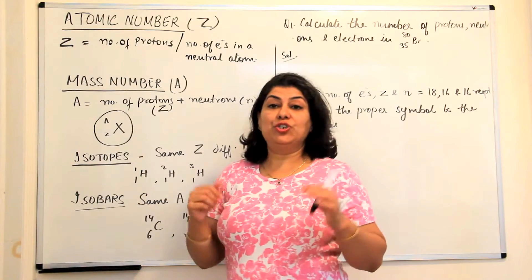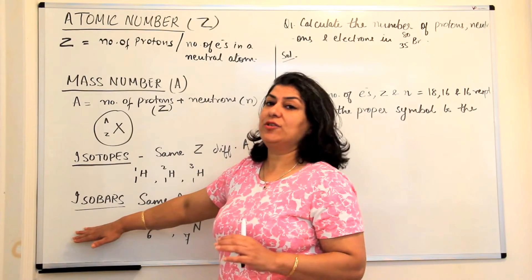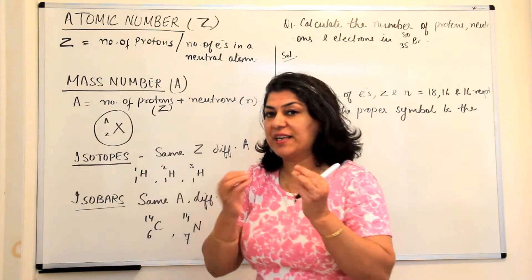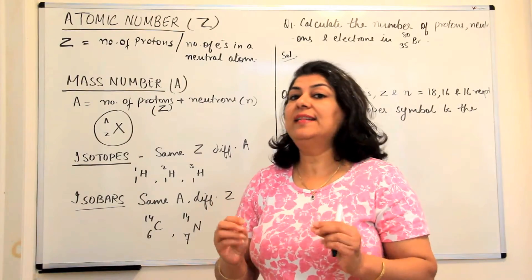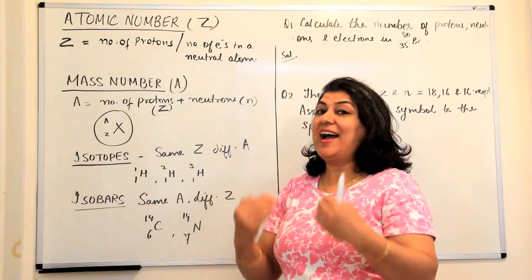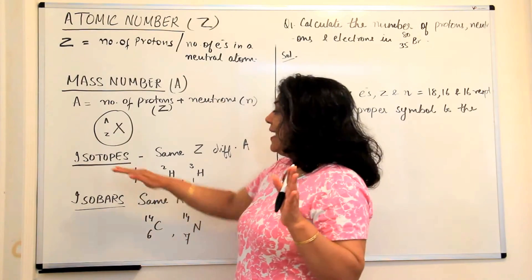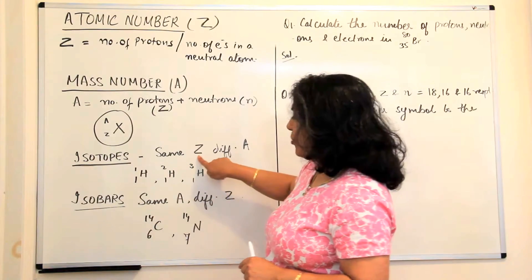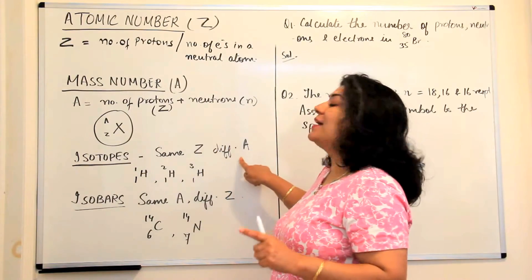Now there's another thing we should know before writing the symbols of elements: the presence of isotopes and isobars. Isotopes are atoms of the same element — meaning they have the same number of protons — which have the same atomic number obviously, because atomic number is the identity of the element, but different mass numbers.